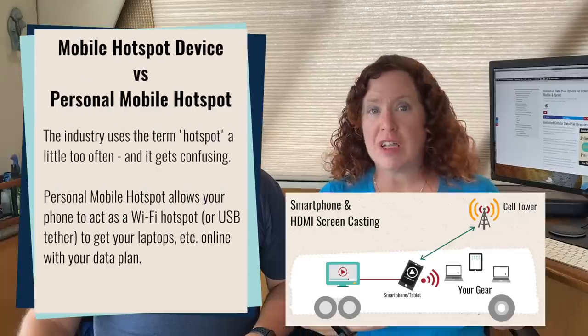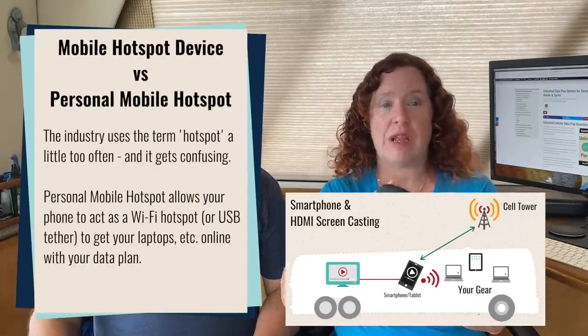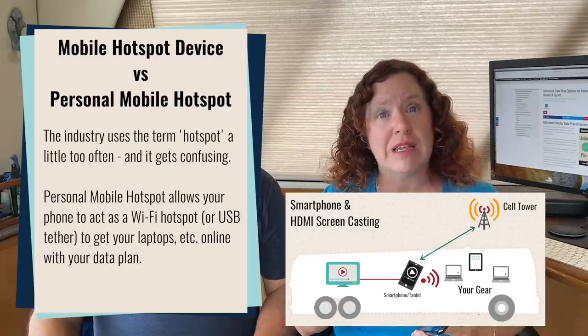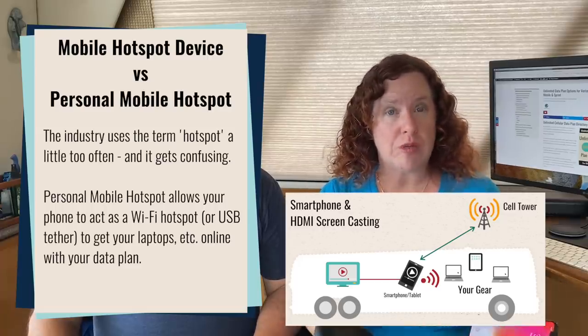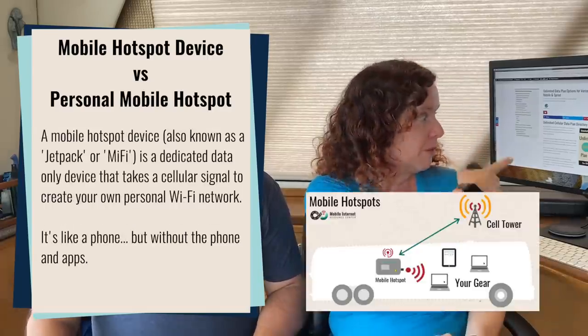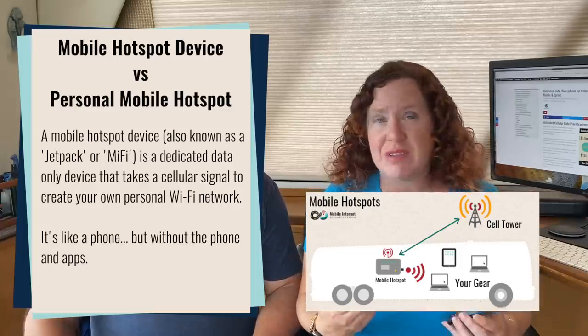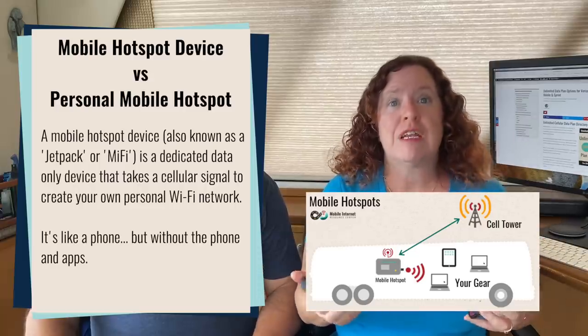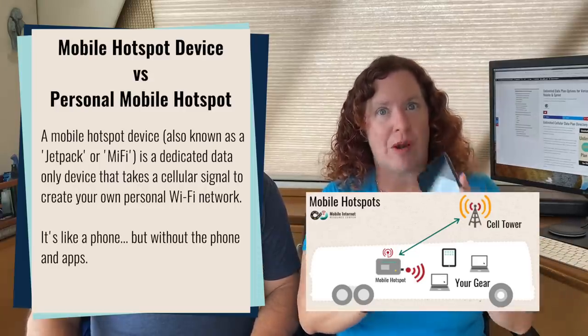The next limit on unlimited data plans is that the unlimited data tends to be only for use on your smartphone or tablet. But what about how much you can use as mobile hotspot? Mobile hotspot is the ability to take your cellular data plan and create a Wi-Fi network off your smartphone or dedicated hotspot device — your own local network that uses cellular to get your laptops, computers, streaming devices, and remote management things online rather than using your smartphone directly.